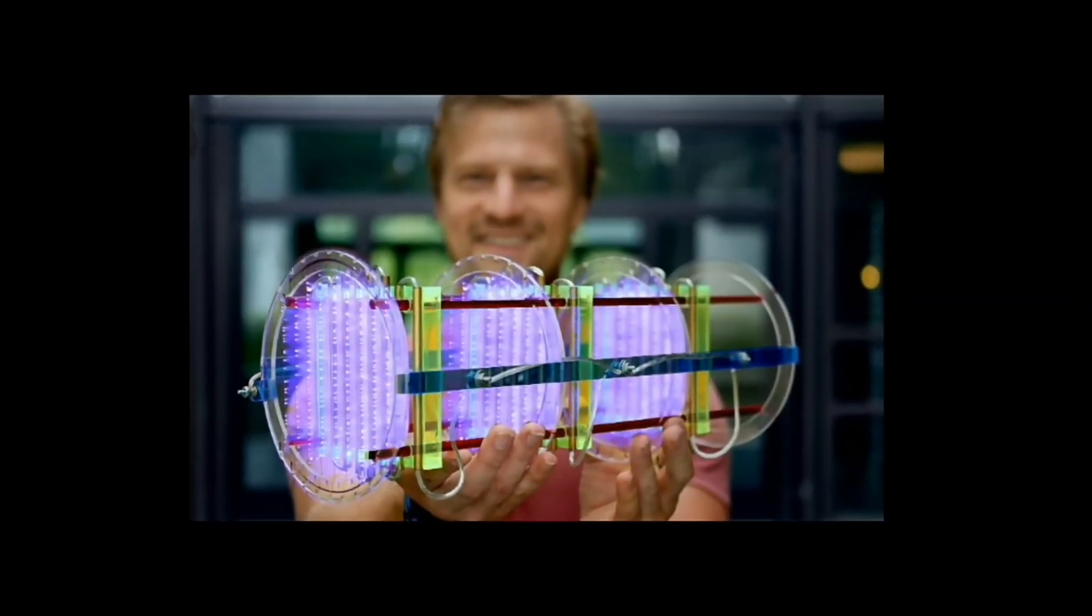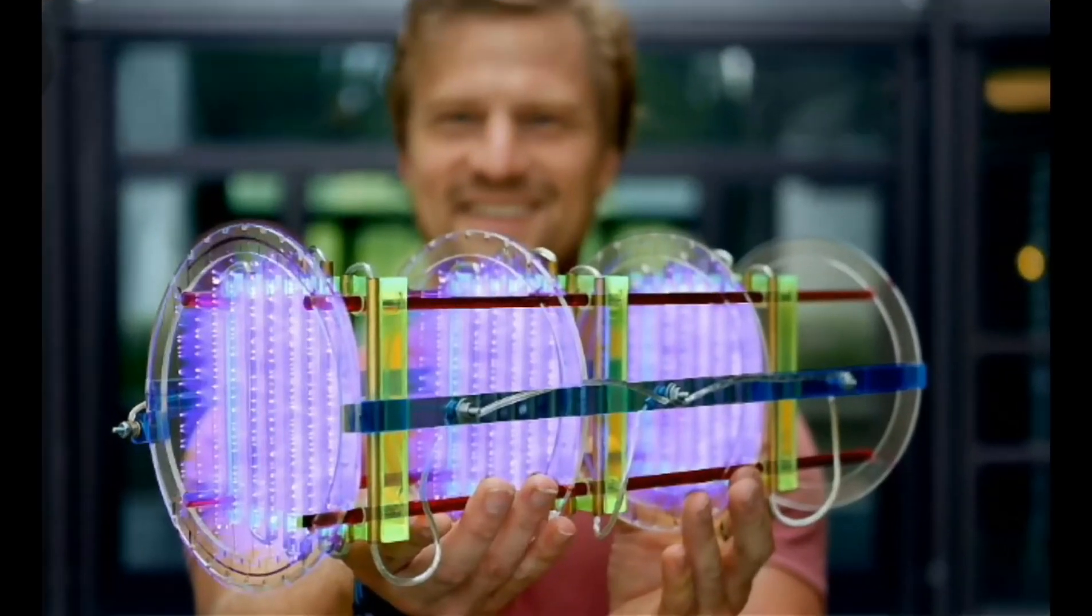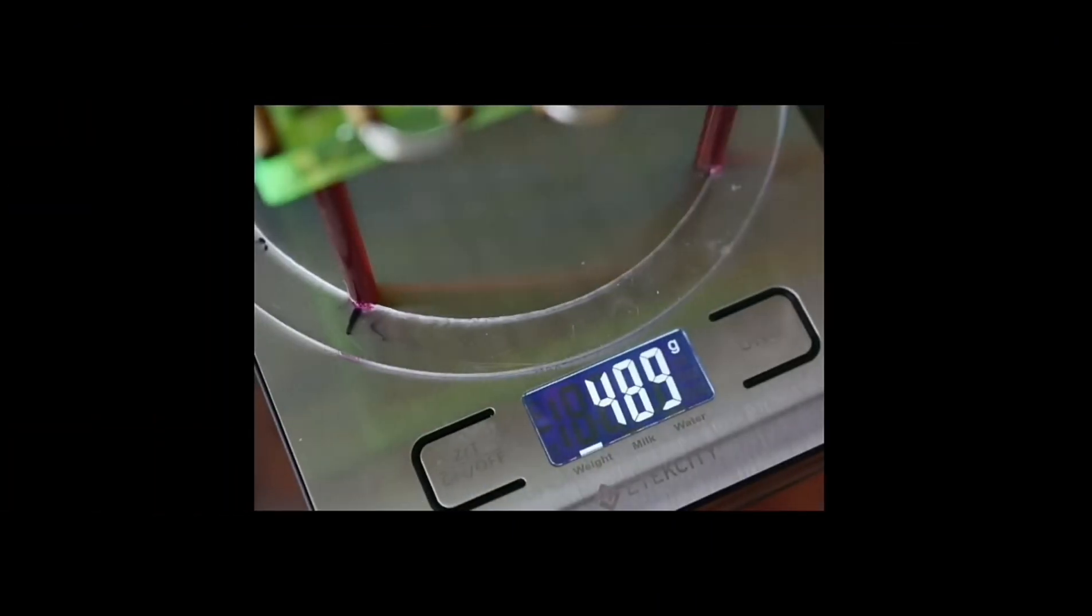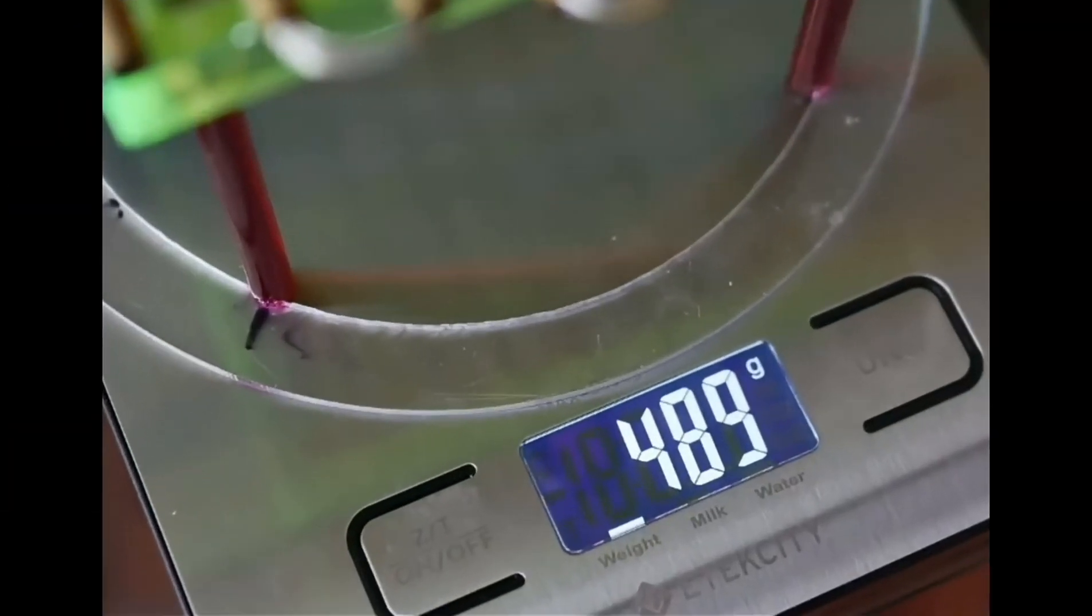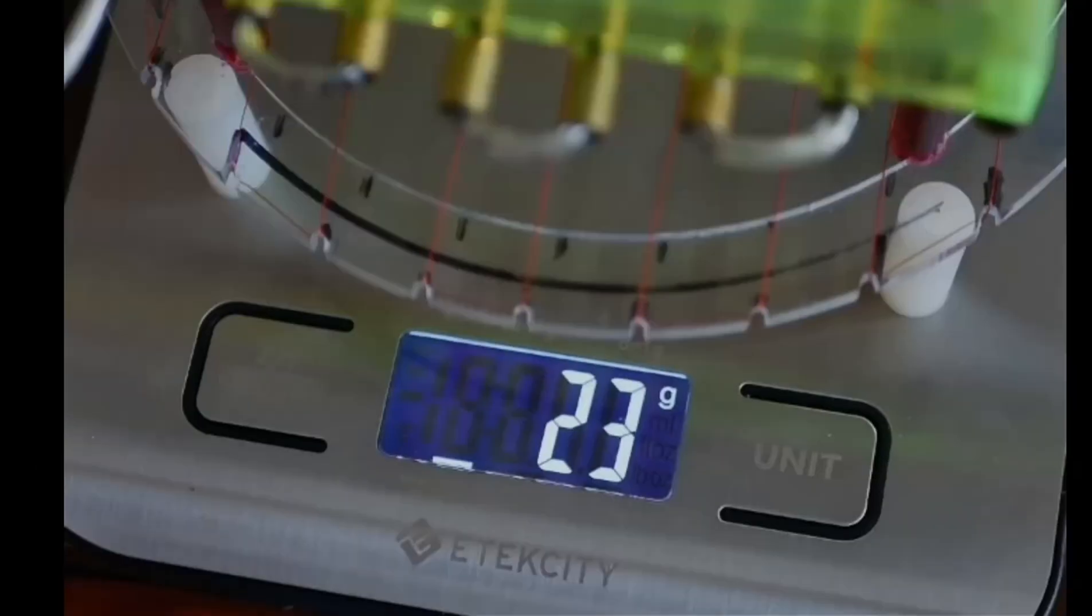This guy built an ionic thruster which produced a lot of ionic wind as he spaced the charged electrodes. And when he measured the weight of his powered thruster, the weight dropped from 489 grams to 23 grams.